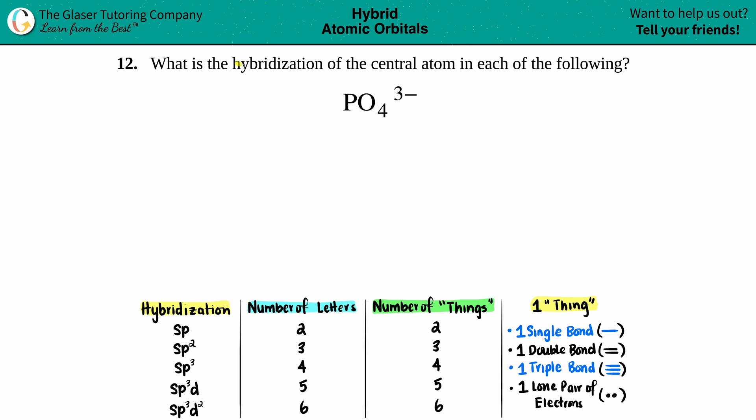Number 12: What is the hybridization of the central atom in each of the following? And then we have the phosphate ion, which is PO4 3-. Okay, so whenever they're asking you for the hybridization, the easiest thing to do is to always draw the Lewis structure.